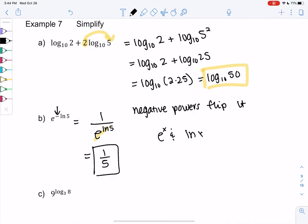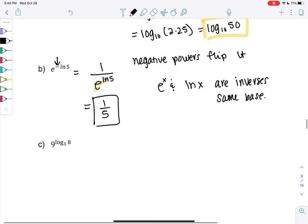So e to the x and ln of x are inverses because they have the same base. So in example C, when I have 9 to the log 3, those are not the same base. So we need the same base before we can cancel.